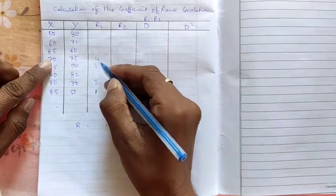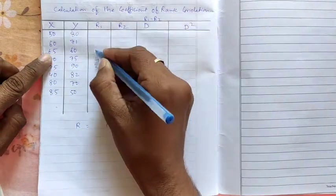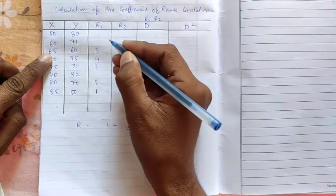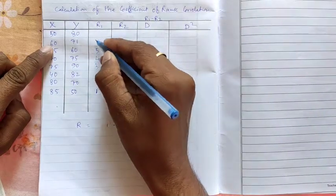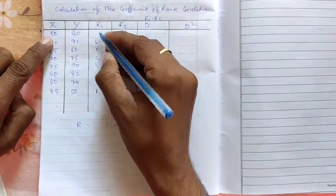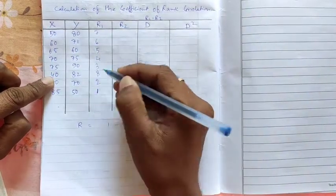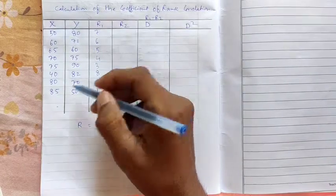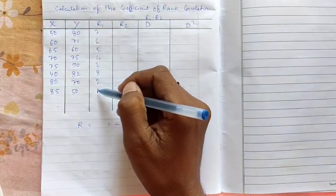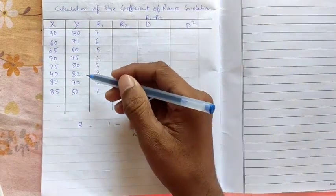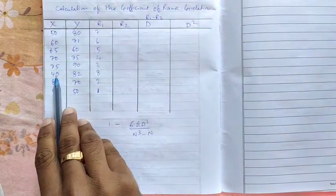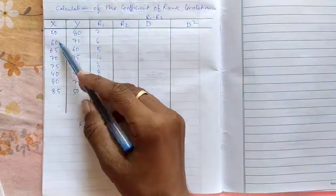Then 70 will be rank 4. Then 65 will be rank 5. Then 60 will be rank 6. 50 will be rank 7. And at the last 40 will be rank 8. So we need to keep rank. Highest number will be ranked as 1. And similarly it goes on. And here the lowest rank is 40. That is 8. So there are 8 numbers in total.